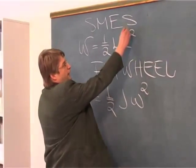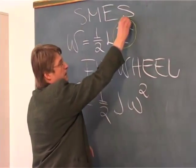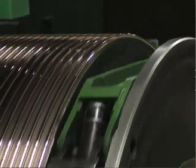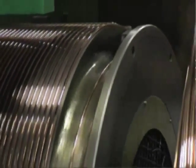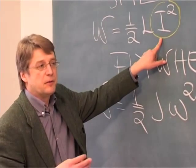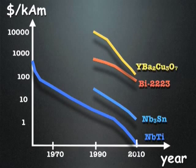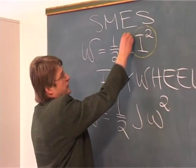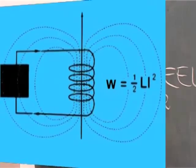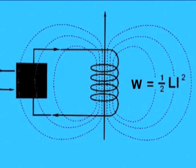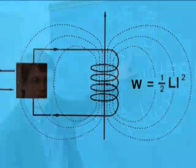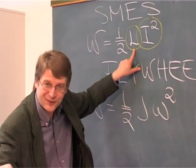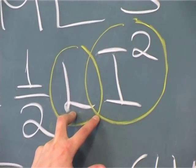If you like to increase the energy in SMES, of course we can increase the current. But if you do so, it sets quite high demands for the conductor which we use, and it may be so that the costs of the conductor will become very high. The other method is to increase the inductance. But if we do so, we must have more turns in the coil. And if we have more turns, we have more conductor, and of course it increases the costs.